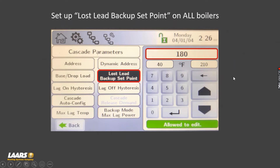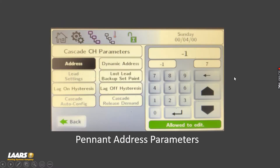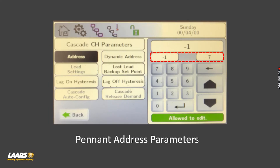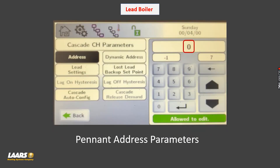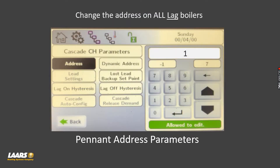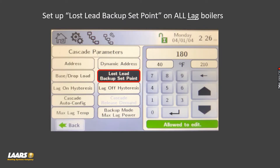Keep in mind the lead boiler will need to be operating and calling for the member boilers in order for them to operate on their own setpoint. Continuing down the line for boiler two, you need to get into the addressing and change that address. The lead boiler is zero, member boilers get one through seven — that is only on the Pennant. The third boiler in line becomes addressed as two. Don't forget you need to go into each member boiler, hit lost lead backup setpoint, and change that value to whatever you need.